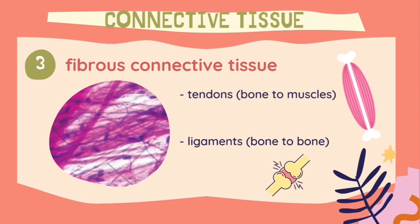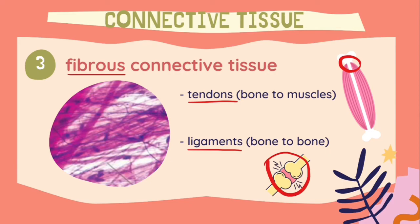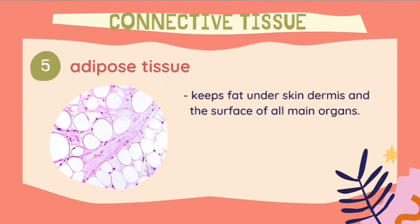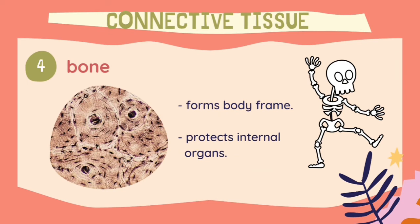Other than that, we have the fibrous connective tissue. The fibrous connective tissues form tendons and ligaments. Tendons are structures that connect bone to muscle, whereas ligaments are structures that connect bone to bone. Another important connective tissue is the adipose tissue. The adipose tissue keeps fat under the skin dermis and on the surface of all main organs. Speaking of bones, they are also a type of connective tissue. Bones function to form the body frame of a human or other organisms and also to protect the internal organs.